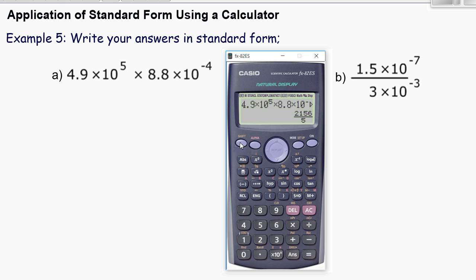So to do that, go to shift, setup, then go to number 7, scientific, so 7, and just press 3 for three significant figures.